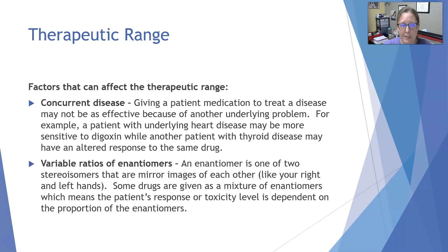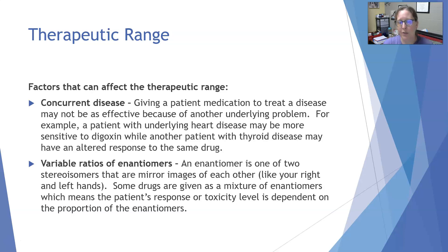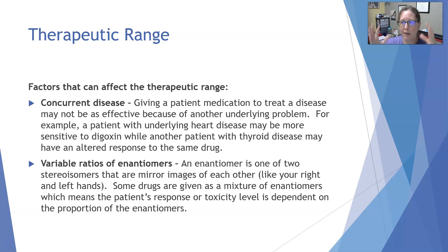Concurrent disease: giving a patient medication to treat a disease may not be as effective because of another underlying problem. For example, a patient with underlying heart disease may be more sensitive to digoxin, while a patient with thyroid disease may have an altered response to the same drug. Hyperthyroid patients may hyper-metabolize the drug quickly, while hypothyroid patients have slowed metabolism and detoxification — both can significantly affect therapeutic levels.